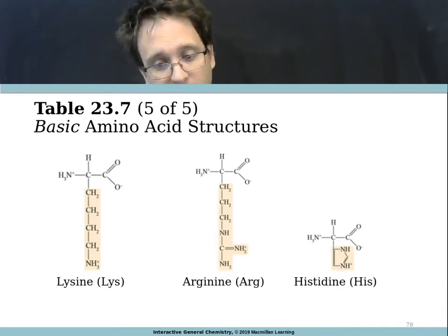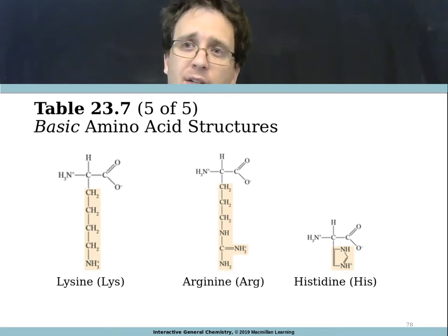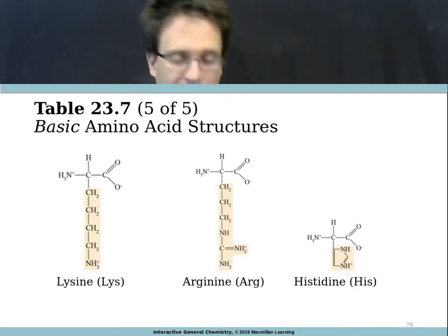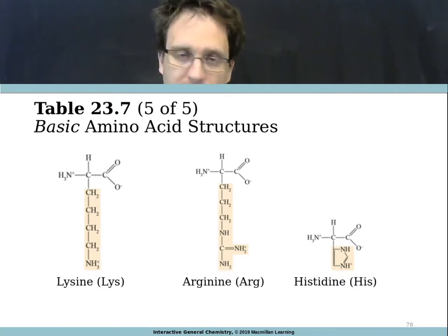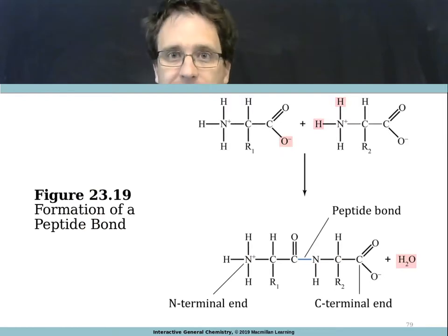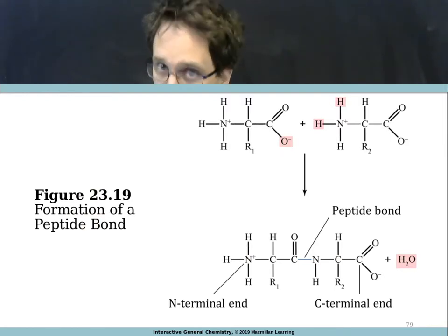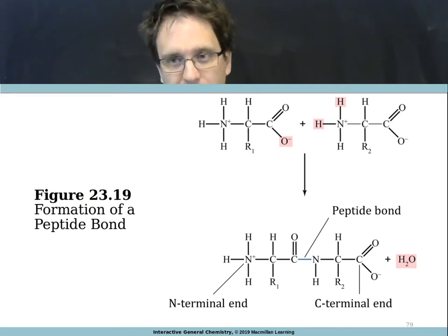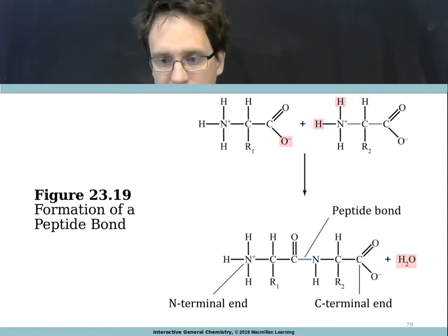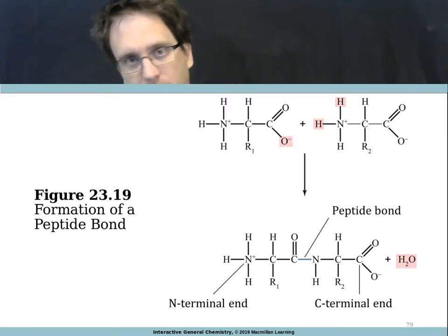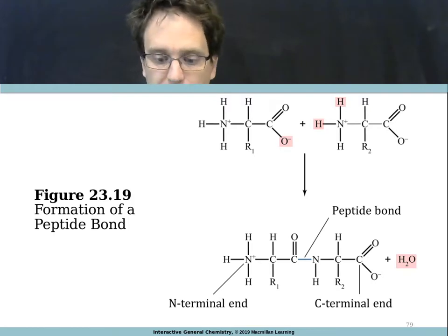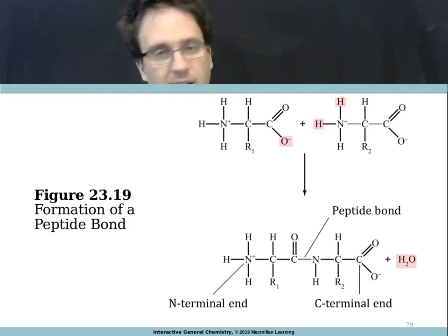Those are the 20 amino acids. You don't need to memorize their names or three-letter symbols — that comes in biochemistry — but refer to table 23.7 and categorize them as polar, non-polar, acidic, and basic. Amino acids are joined together by forming an amide bond. In the context of amino acids and proteins we call this a peptide bond, but it is just an amide bond — the carboxylic acid and amine bind through that carbon-nitrogen bond.